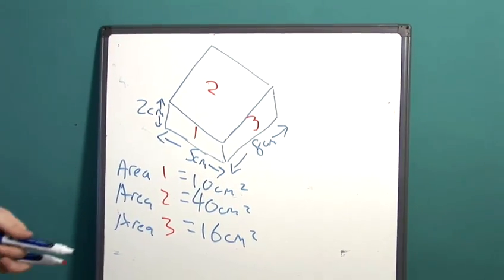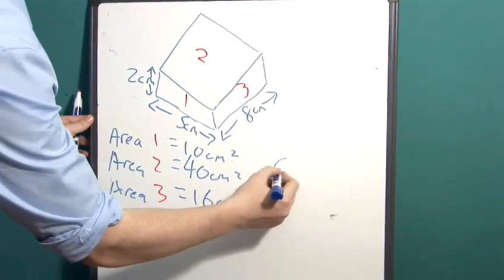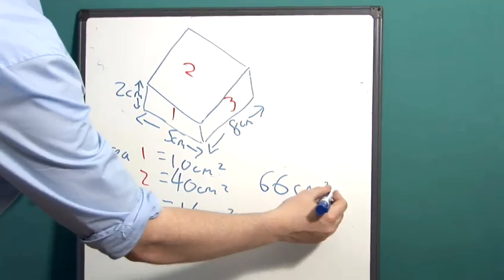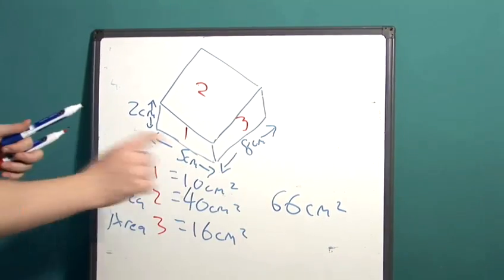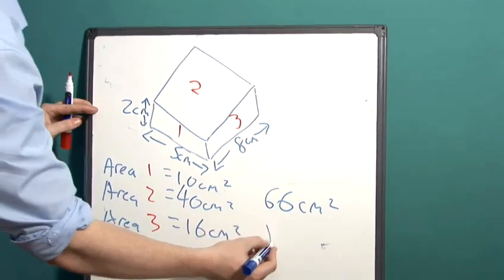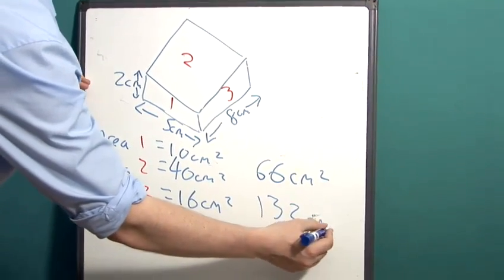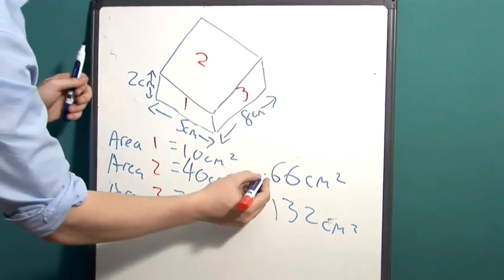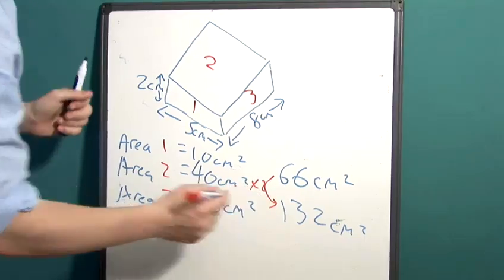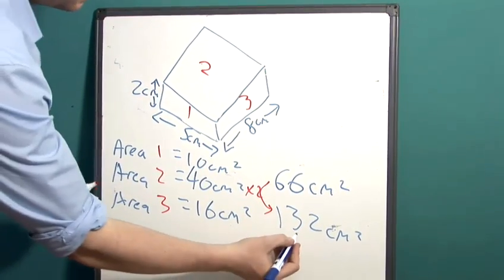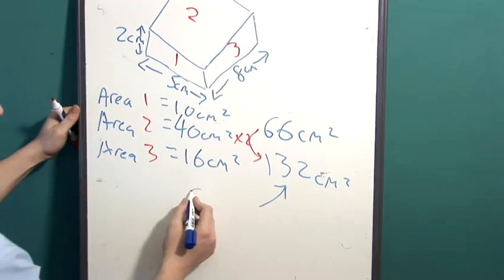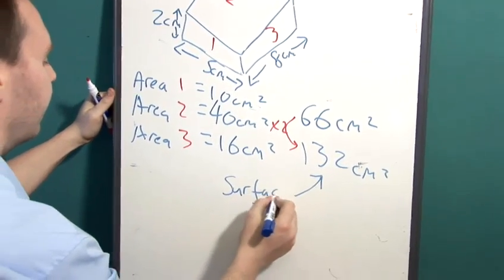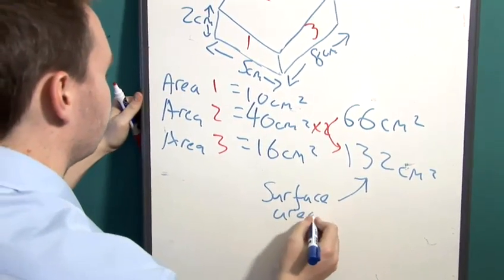We add these up and that will give us 66 centimetres squared. The final step is to multiply this 66 by 2 giving us 132 centimetres squared. I'll just write that step there. We multiply this by 2 and this here is our final area. This is the surface area of the prism.